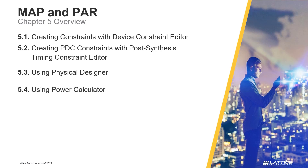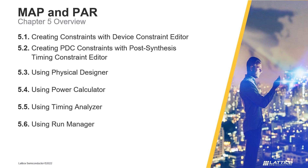In the fourth section, Using Power Calculator, we will discuss Radiant's Power Calculator tool and how it can be used to calculate the static and dynamic power consumption of a design. In the fifth section, Using Timing Analyzer, we will discuss Radiant's Timing Analyzer tool and how it can be used to check a design's timing performance after place and route. In section six, Using Run Manager, the Run Manager tool will be introduced, as well as how it can be used to run the project flow for multiple implementations in a project.